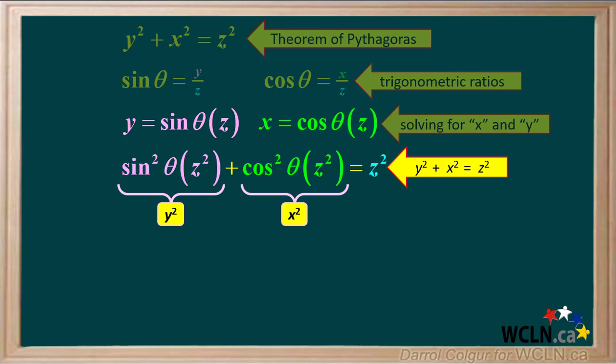y squared is sin squared theta times z squared, and x squared is cos squared theta times z squared.